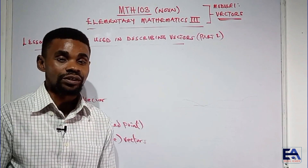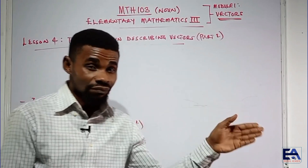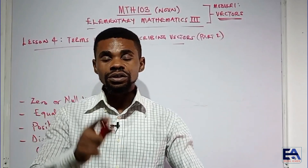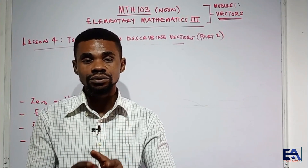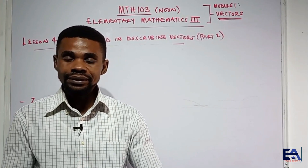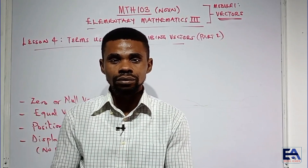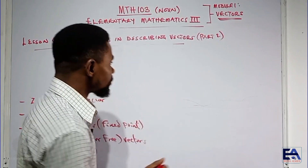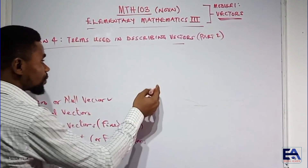The zero vector or the null vector is a vector whose magnitude is zero — just like the unit vector is the vector whose magnitude is one. There are about two reasons why a vector could have a magnitude of zero.